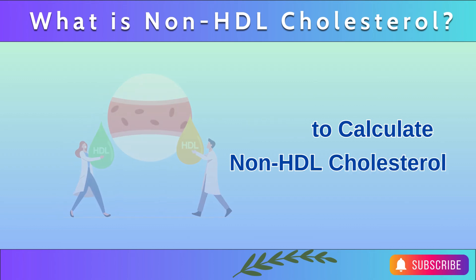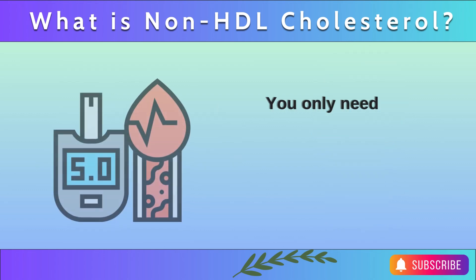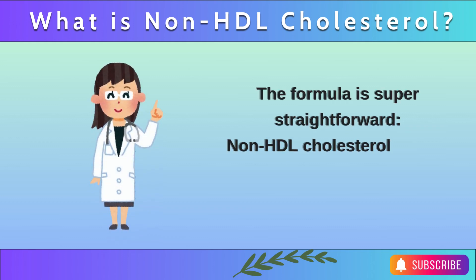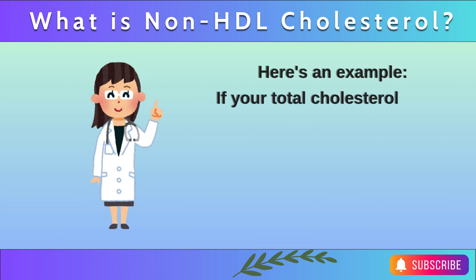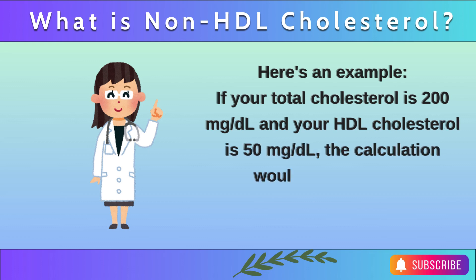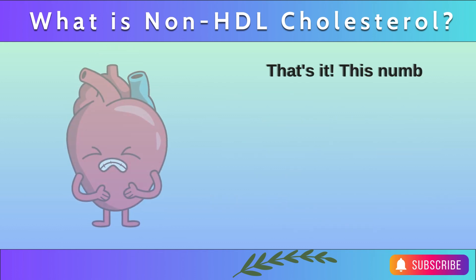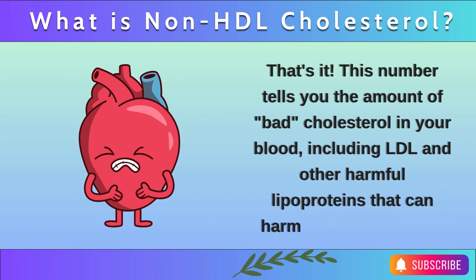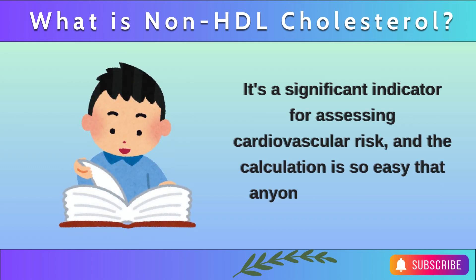How to calculate non-HDL cholesterol: calculating non-HDL cholesterol is simple — nothing complicated at all. You only need two numbers: total cholesterol and HDL cholesterol. The formula is straightforward: non-HDL cholesterol equals total cholesterol minus HDL cholesterol. For example, if your total cholesterol is 200 mg/dL and your HDL cholesterol is 50 mg/dL, then non-HDL cholesterol equals 200 minus 50, which equals 150 mg/dL. This number tells you the amount of bad cholesterol in your blood, including LDL and other harmful lipoproteins that can harm your heart health. It's a significant indicator for assessing cardiovascular risk, and the calculation is so easy that anyone can do it.